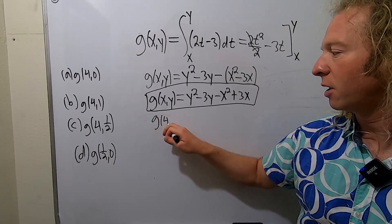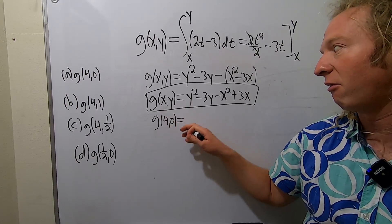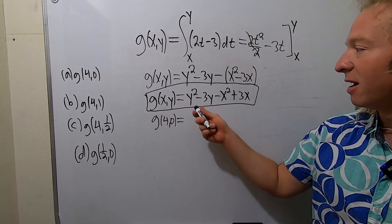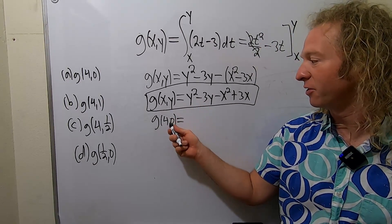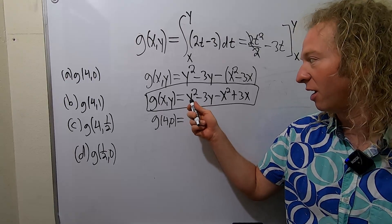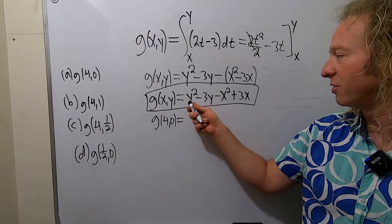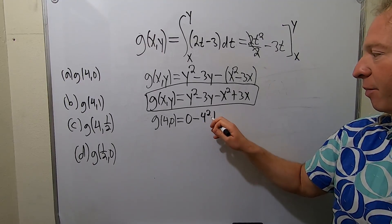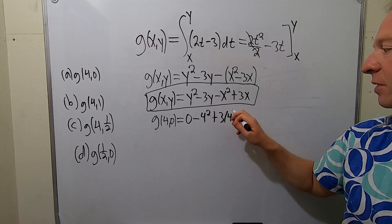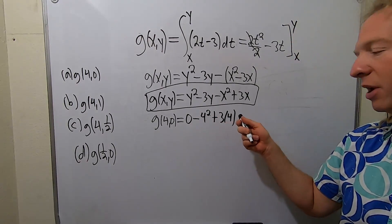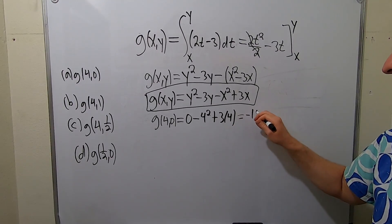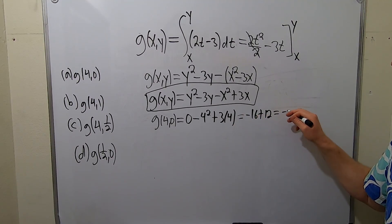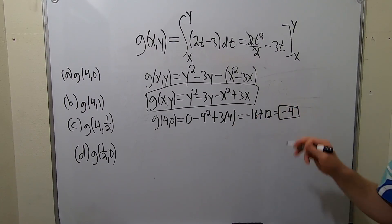g of 4 comma 0. Oh, it's really easy to mess up because the y comes first. I was going to put a 4 here, that's wrong. So y is 0, so all of these are 0s. You get 0 minus 4 squared plus 3 times 4. So you get minus 16 plus 12. That's equal to minus 4. One down, three to go.